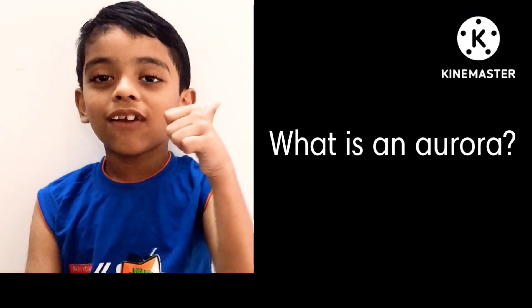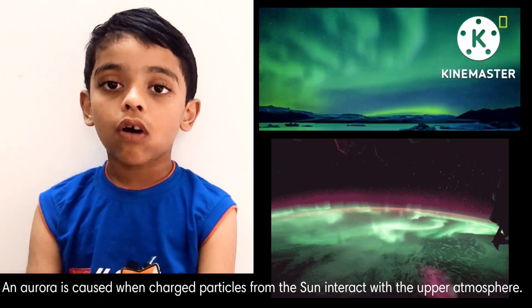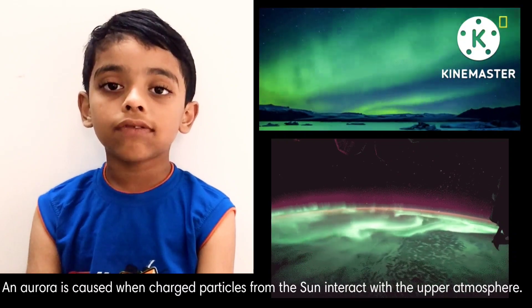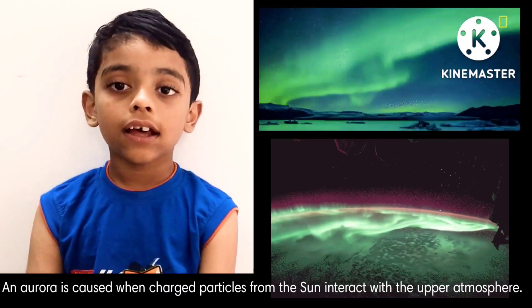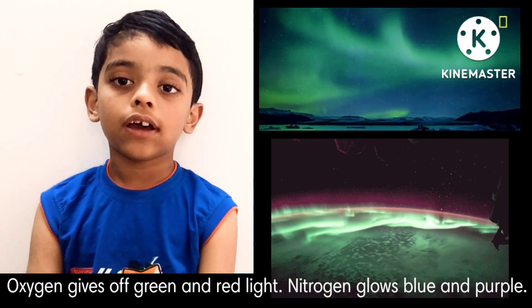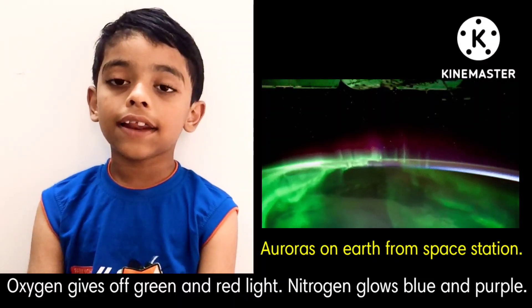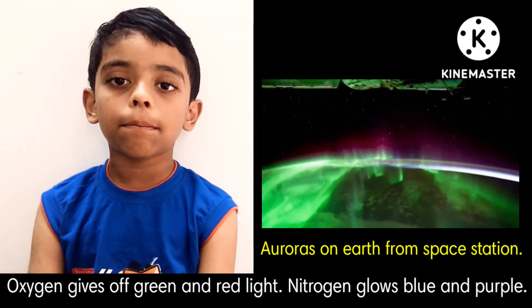What is an Aurora? An aurora is caused by charged particles from the Sun. In fact, within the upper atmosphere, oxygen gives off green and nitrogen glows blue and purple.